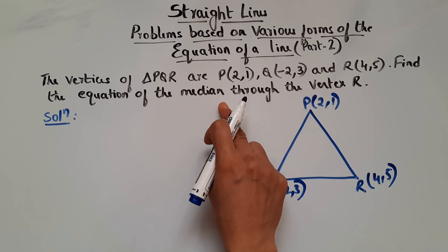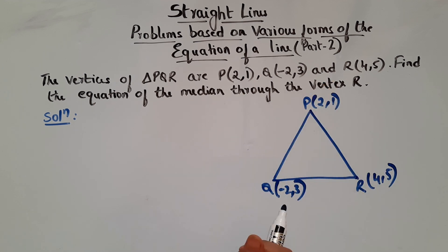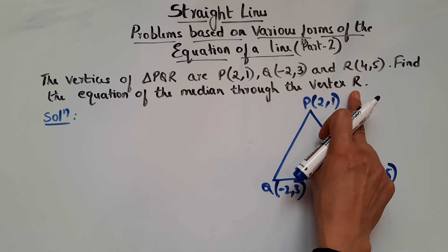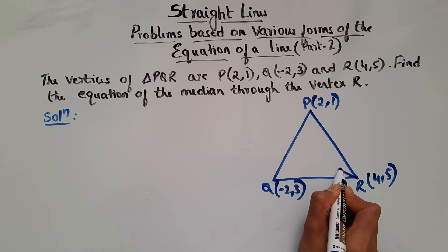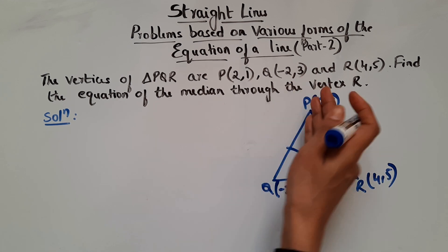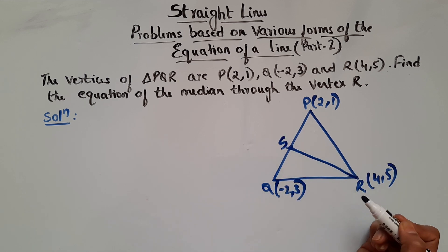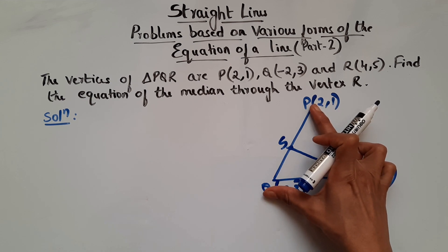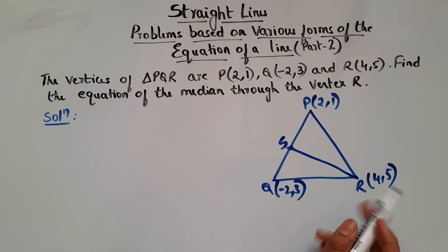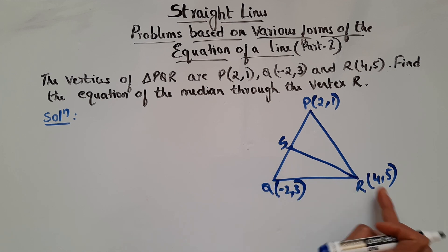Here, what is a median? A median is the line joining the vertex to the midpoint of the opposite side. Here the vertex is R. So from R, it's a line joining to the midpoint of the opposite side PQ. Here the opposite side is PQ. So let's take this midpoint as S. So S is the midpoint of PQ. They are asking the equation of line SR — this is the median. In order to find the equation of this line, we know R. How to find point S?